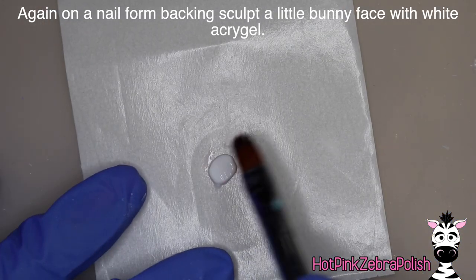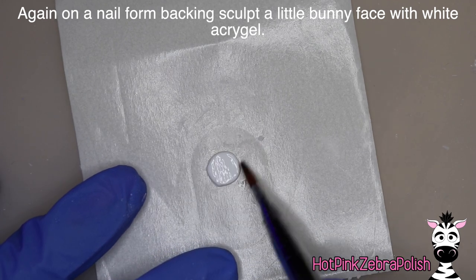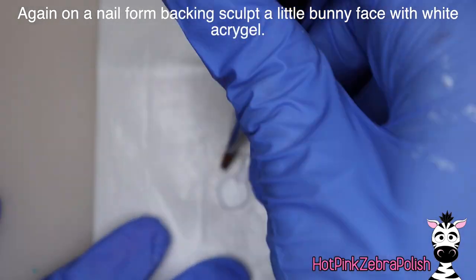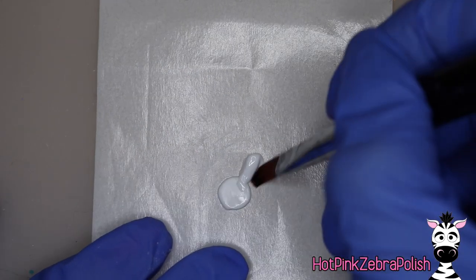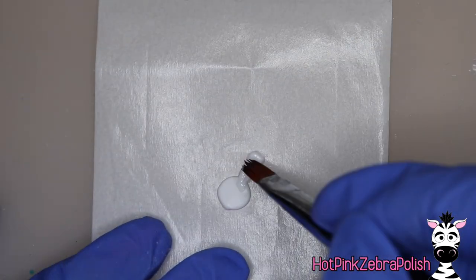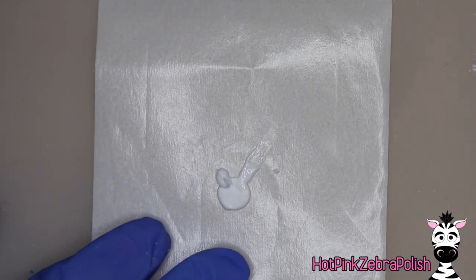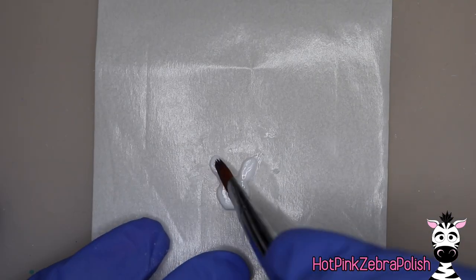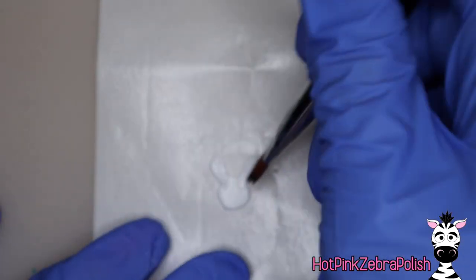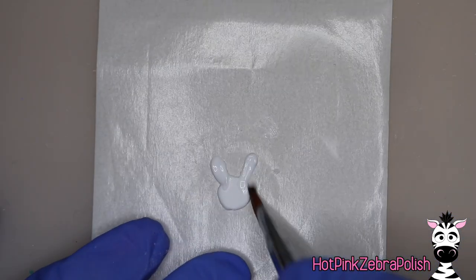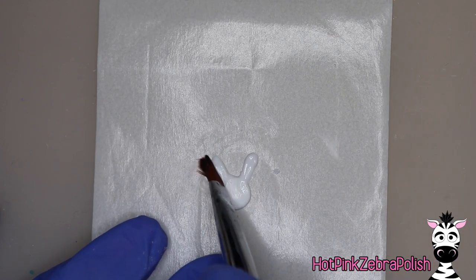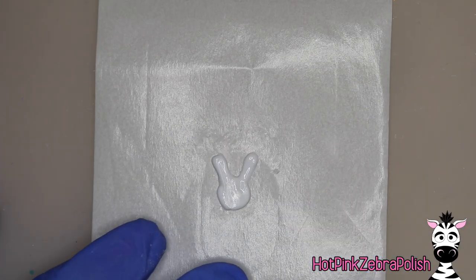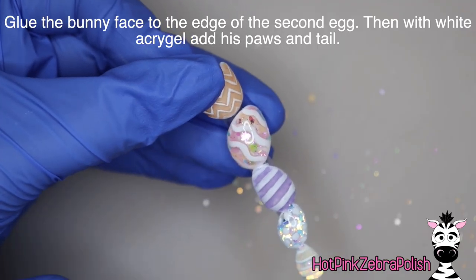Then after you have that, cure this again, and now we're going to make our little bunny. So the bunny hanging onto the eggs was actually the first idea I had for this. And it's so funny because it's the last thing I did and it almost feels like an afterthought, but it was actually a big part of the idea I had for this nail. So we're going to use more acrogel, white acrogel, and we're going to be sculpting our little bunny. So I started out with a circle and then cured it. Then I'm going to sculpt the ears, two ears coming up on my bunny. Not the easiest process. I decided to move my ears closer together so they weren't so far spread. Just kind of pull them.